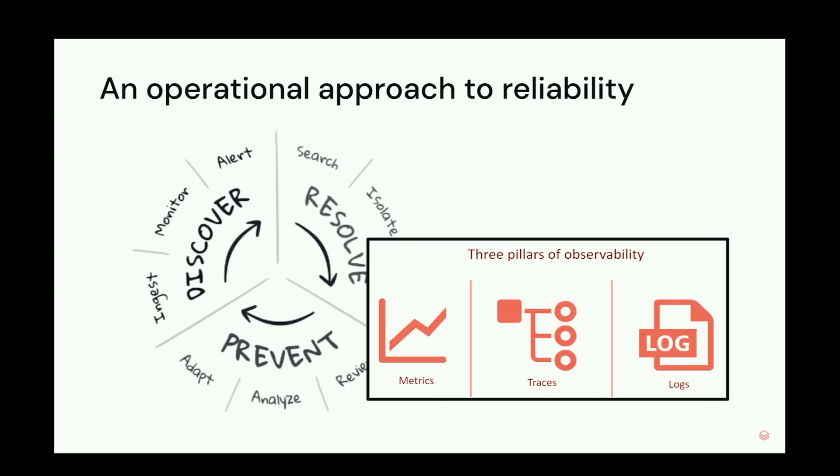Data observability is very similar to the operational approach to software reliability. We want to understand that an issue is happening, have the right tools to triage and resolve the incident as quickly as possible, and then learn and adapt over time. In application observability we have metrics, traces, and logs. As an engineering team, we monitor database CPU, ElastiCache memory consumption, application performance P75 and P90 — whatever the SLO defines. We don't want to be the last ones to know when something breaks. Same goes for data teams.